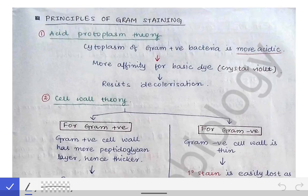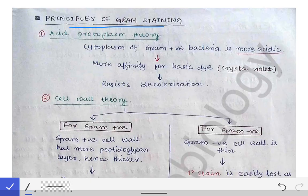We are going to read about the principles of Gram staining — why the Gram-positive bacteria looks violet while the Gram-negative bacteria looks pink. For explaining the reason behind Gram staining, we have three types of theories: the first is the acid protoplasm theory. Before going into these theories, we must recapitulate the reagents we use in Gram staining sequentially.